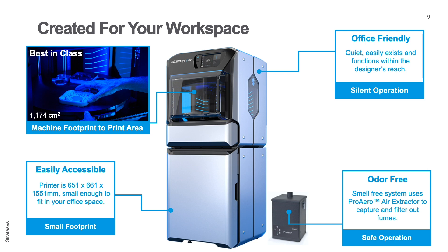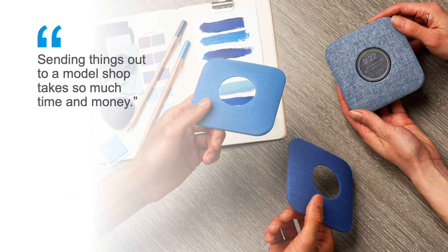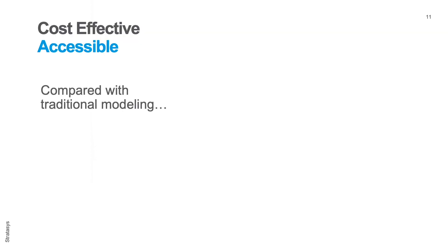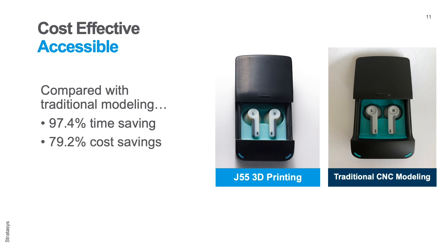The J55 is truly created for where you work and how you work. Why waste time and risk your designs by sending things out when you can bring powerful possibilities in-house? Let's compare outsourcing versus insourcing. If we compare two versions of detailed design prototypes of an earbud case, it's possible to save 97.4% in time and 79% in cost — that's $84.05 of print time versus $405.08 by sending it out to CNC modeling. Hours versus days. Dollars versus hundreds of dollars.